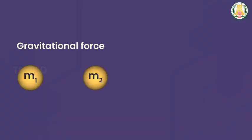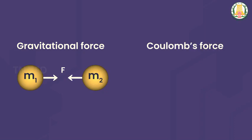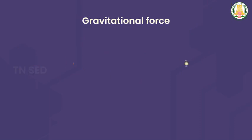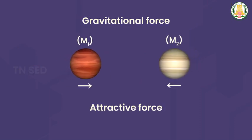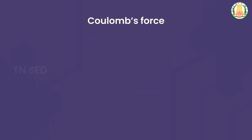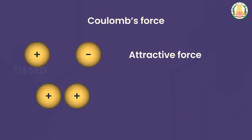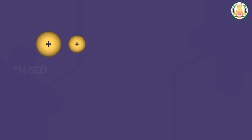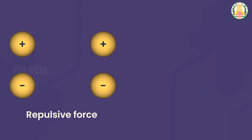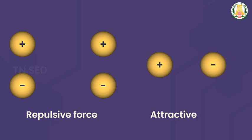Gravitational force acts between two masses and is always attractive. But the Coulomb force between two charges can be either attractive or repulsive. If both charges are positive or both are negative, we get a repulsive force. If one charge is positive and the other is negative, we get an attractive force.